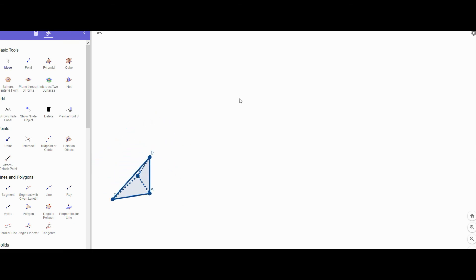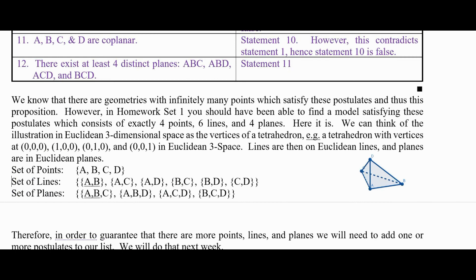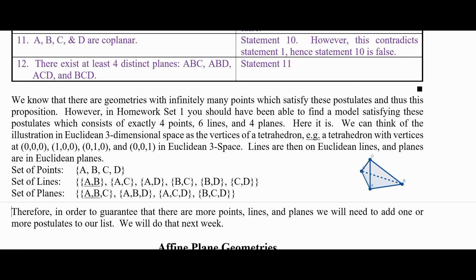But in reality we're just talking about just the four points as being all that there is — four points, six lines, four planes. If we want more points, lines, or planes than this, we're going to need to add one or more postulates to extend this so that we can't have just a finite geometry. If we want a geometry with infinitely many points like Euclidean geometry, we will need more postulates. We're going to get to that in our next playlist, and we'll look at some other types of finite geometries in the next couple of videos in this playlist.